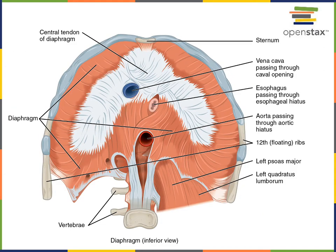Here we see an inferior view of the diaphragm. The diaphragm is a dome-shaped muscle that forms the border between the thoracic cavity and the abdominal cavity. The cruces of the diaphragm are attached to the lumbar vertebrae. When the muscle contracts, it pulls the central tendon inferiorly so that the entire dome shape flattens and moves inferiorly, expanding the thoracic cavity. The diaphragm is the primary muscle of inspiration — when it contracts and thoracic cavity volume increases, air flows into the lungs.